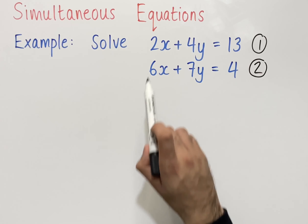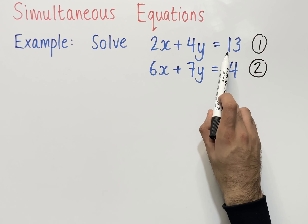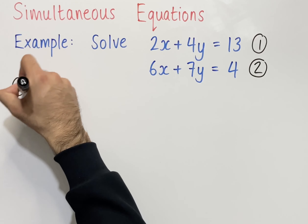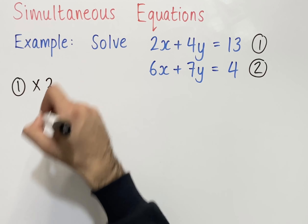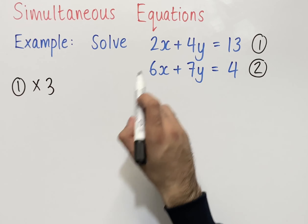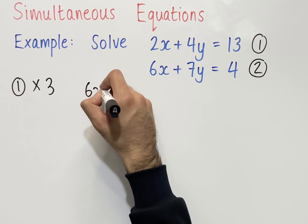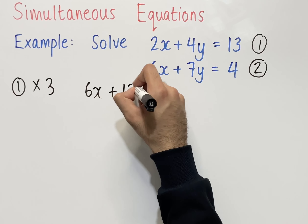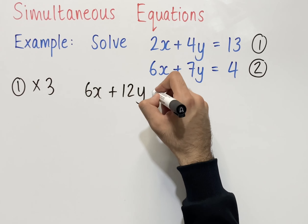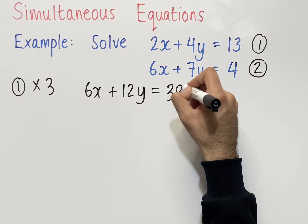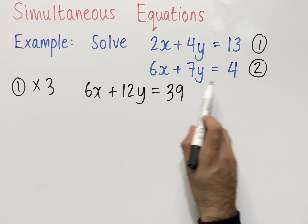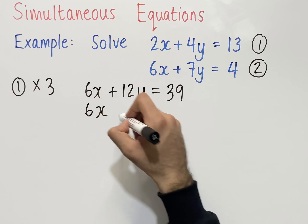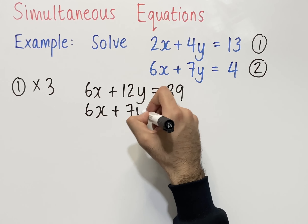To get 6x in the first equation, we multiply everything in equation 1 by 3. So 2x times 3 is 6x, 4y times 3 is 12y, and 13 times 3 is 39. The second equation we can leave as it is, since we've already got 6x in it: 6x plus 7y equals 4.